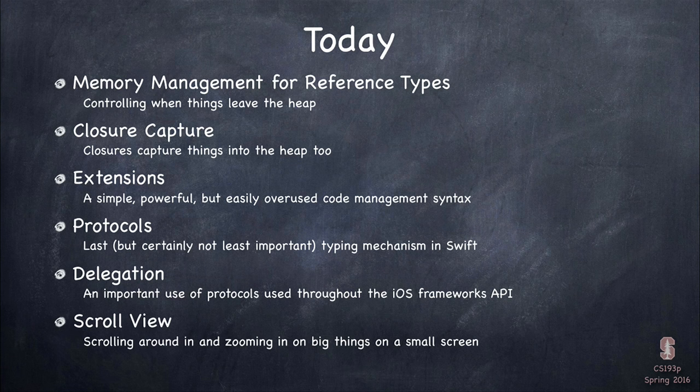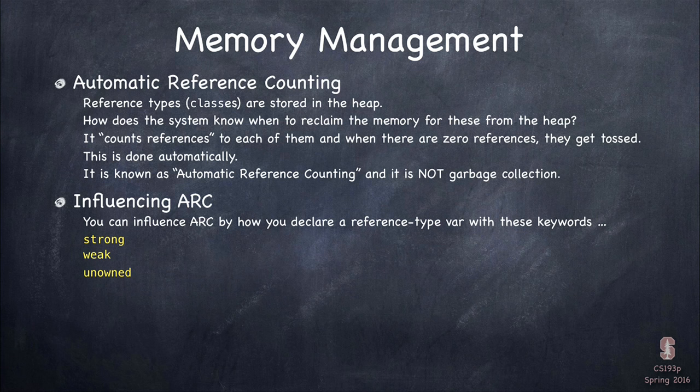Towards the end, we'll talk about an iOS concept that comes over from the Objective-C world that we have to deal with in Swift, called delegation — it's super important. It has to do with our whole MVC model and how we do that blind structured communication. Then I'll finish off with scroll view, a very important class because these devices are really small and you want to scroll and zoom in on content.